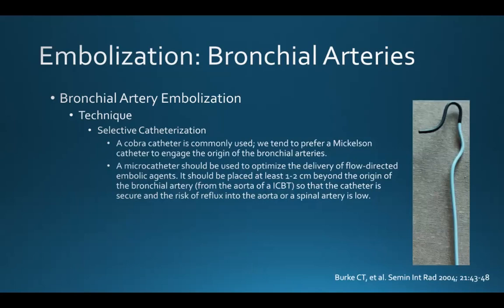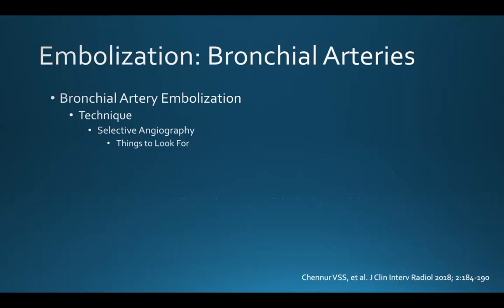When it comes to selective catheterization of the bronchial arteries, we tend to prefer a Mickelson catheter because it's very stable within the aorta. A microcatheter should then be used to optimize the delivery of flow-directed embolic agents. It should be placed at least one to two centimeters beyond the origin of the bronchial artery so that the catheter is secure and the risk of reflux into the aorta or spinal artery is low.